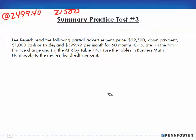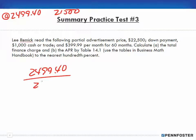For part B, we want to know the APR using Table 14.1 or the business math handbook, rounded to the nearest hundredth of a percent. Our finance charge is twenty-four ninety-nine forty, divided by the amount borrowed, twenty-one five. Since the table is in hundred-dollar increments, we multiply by one hundred, giving us eleven dollars and sixty-three cents.